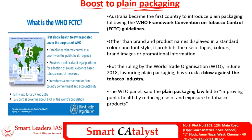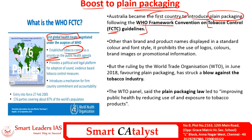The fifth article is boost to plain packaging for tobacco products. As per the WHO Framework Convention on Tobacco Control (FCTC) guidelines, Australia is becoming the first country in the world to introduce plain packaging for tobacco products. The FCTC is the first global health treaty negotiated under the auspices of WHO. It establishes tobacco control as a priority on the public health agenda and provides a political and legal platform for adoption of sound evidence-based tobacco control measures, requiring firm commitment and accountability from all member countries.